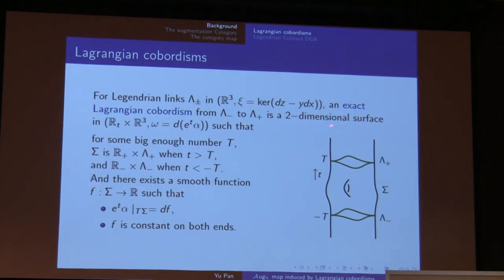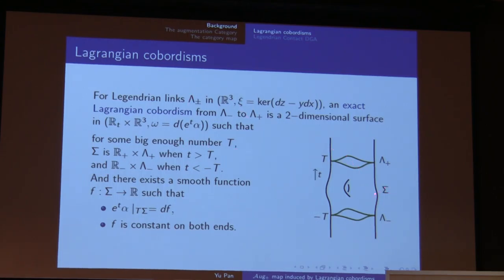We also require the cobordism to be exact. So there is a function from the cobordism to ℝ such that the one-form restricted on the cobordism equals dF, and F is constant on the top and bottom. In this way, we call Σ an exact Lagrangian cobordism from the bottom knot λ₋ to the top knot λ₊. So there is an order here.